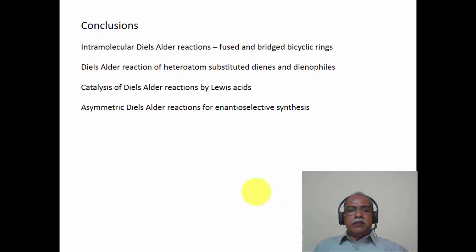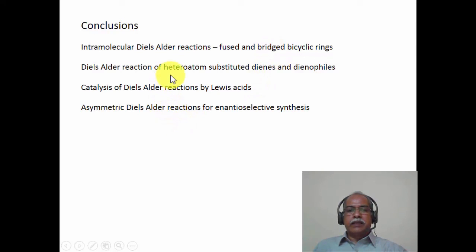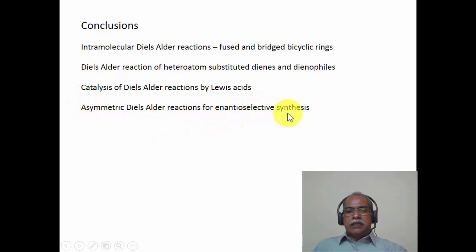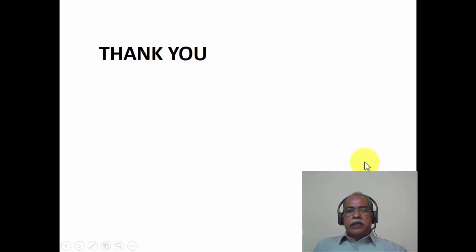Let us conclude this module. We have seen intramolecular versions of the Diels-Alder reaction producing fused and bridged bicyclic systems — fused for 1-substituted derivatives, bridged for 2-substituted diene derivatives. We have seen Diels-Alder reactions with heteroatom-substituted dienes and dienophiles, predominantly oxygen and nitrogen heteroatoms. Lewis acid catalysis reduces the HOMO-LUMO energy gap of the diene-dienophile combination, reducing the activation barrier. Finally, the basic principle of asymmetric Diels-Alder reaction and examples of enantioselective asymmetric Diels-Alder reactions catalyzed by chiral Lewis acids have been illustrated. Thank you very much.